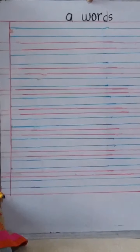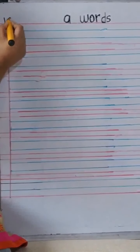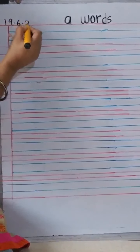Now we have this A family words. First we will write the date. That will be 19.6.20.